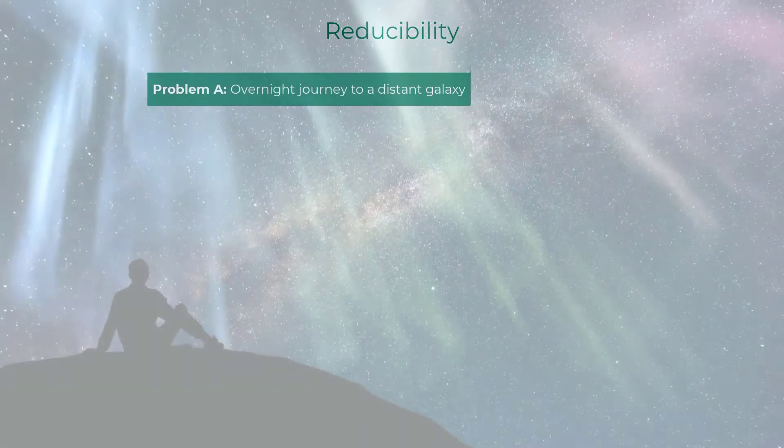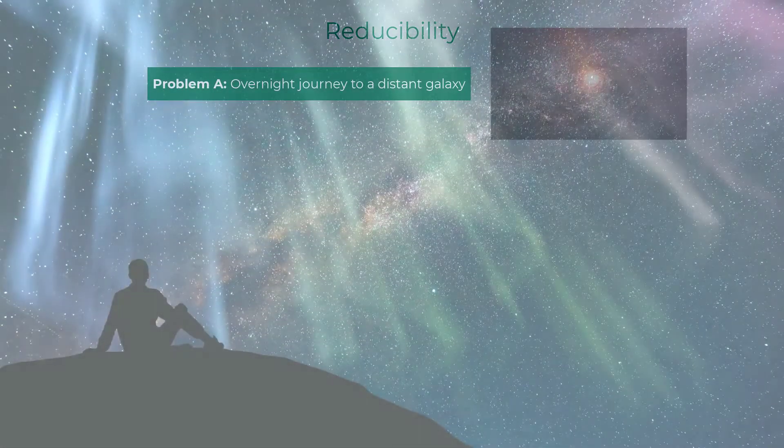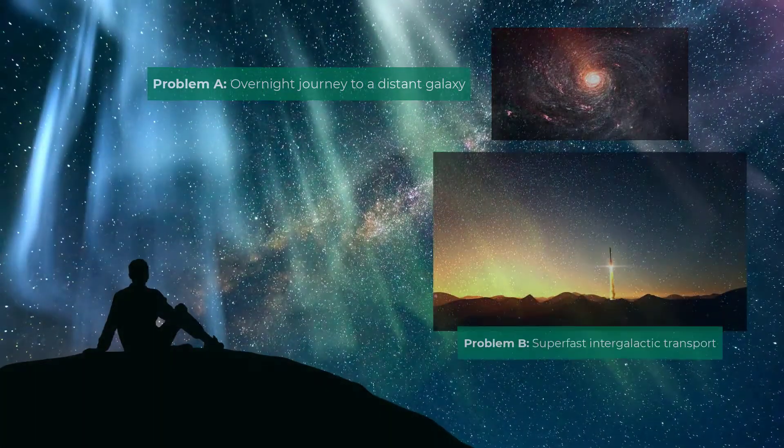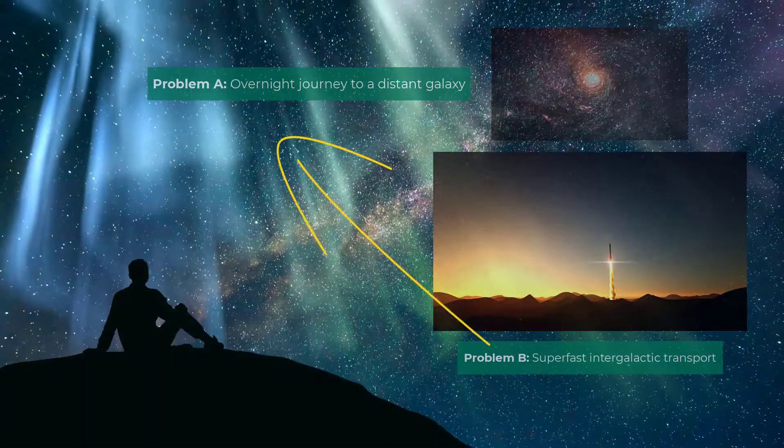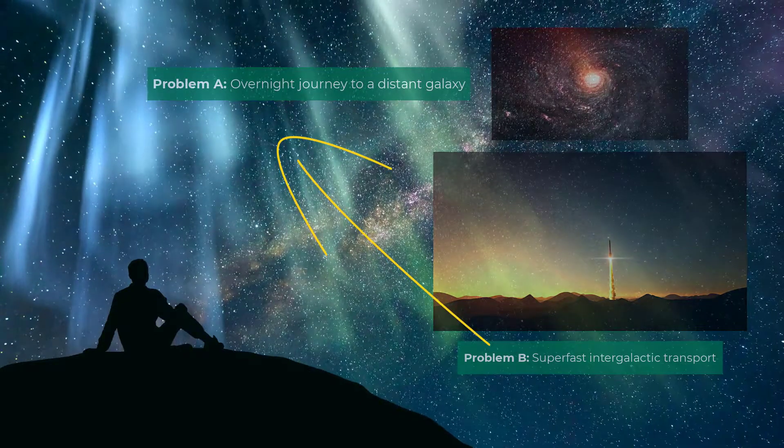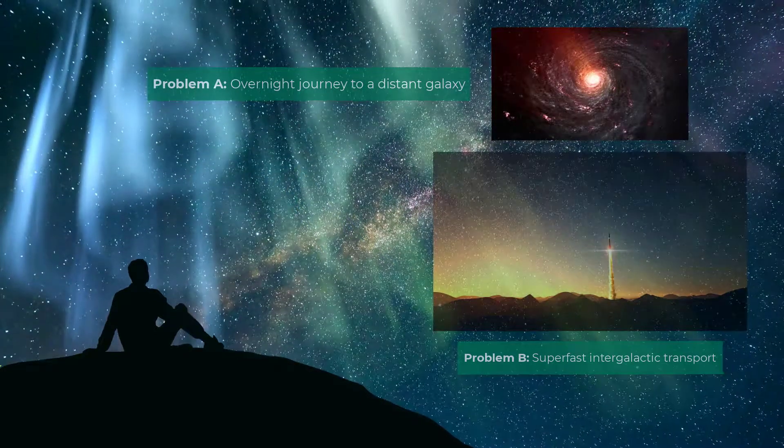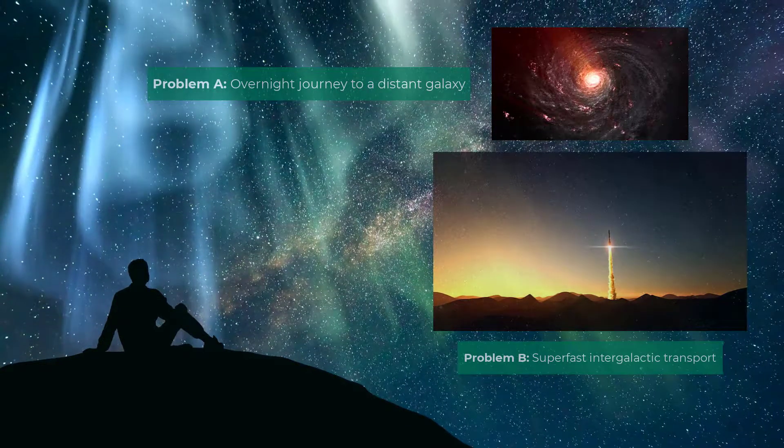Let us consider the problem of traveling from our galaxy to the neighboring galaxy overnight. We shall name this problem A. This problem reduces to the problem of building an intergalactic spaceship that can safely transport us overnight. Let's call this problem B.